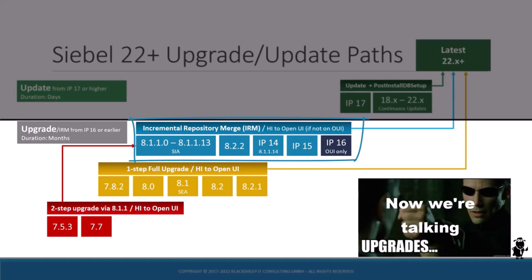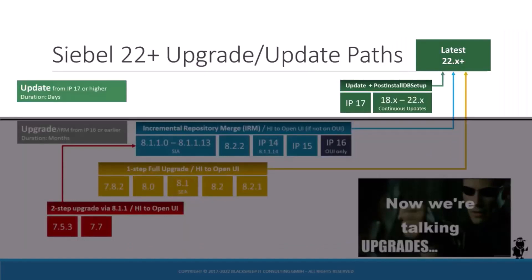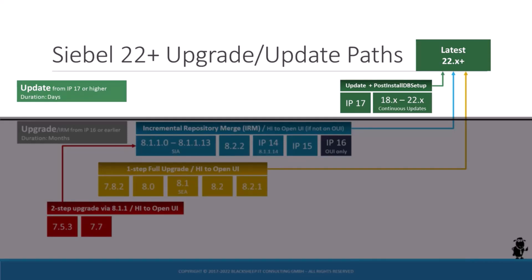Upgrade projects are conducted using an installation of the latest Siebel CRM release available at the time you start the project. If you already ran a successful Siebel upgrade to IP17 or higher, you no longer have to run a lengthy, costly upgrade project. To get from a post-IP17 release to the latest available update, you only have to execute the aforementioned update process. The real benefit of Oracle's continuous release model is evident here, as the update process will at most take a few person days.